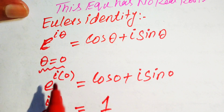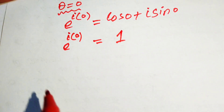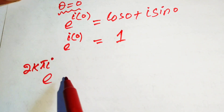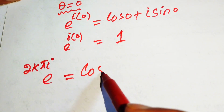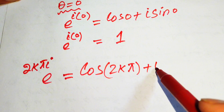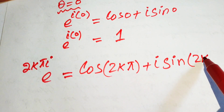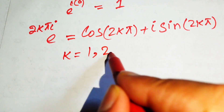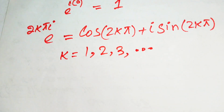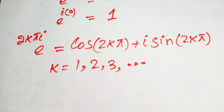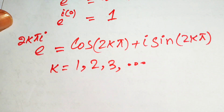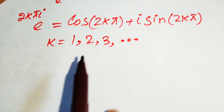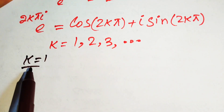In general form, Euler's identity is written as e to the power of 2k pi iota equals cos of 2k pi plus iota sin of 2k pi, where k takes values 1, 2, 3, and so on. We now check the behavior of this identity for different values of k, starting with k equals 1.